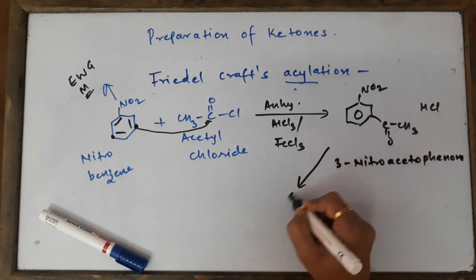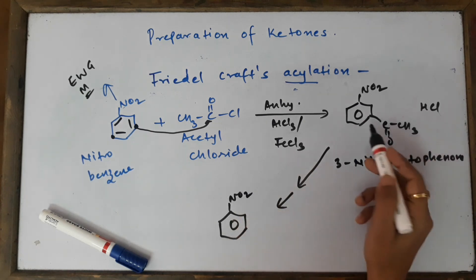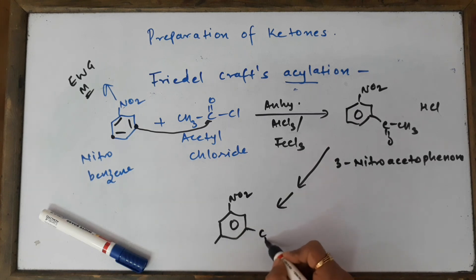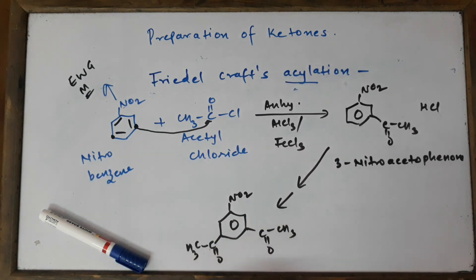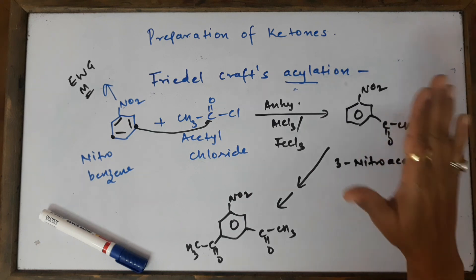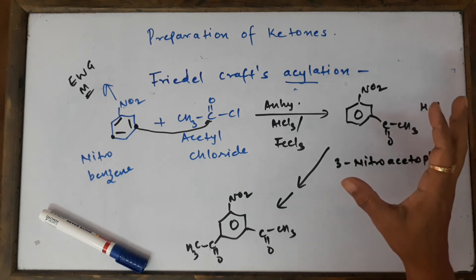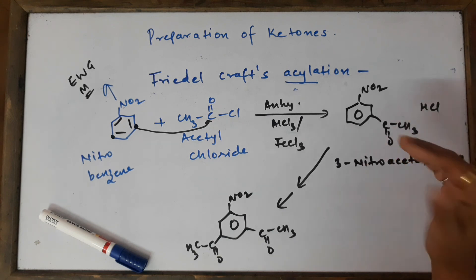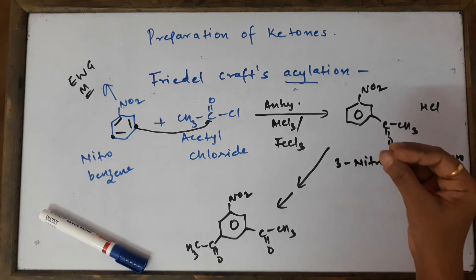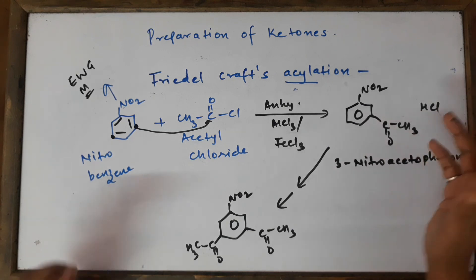If you continue the reaction further without stopping, the second meta position would also get substituted. But in the board exam, we write only the mono-substituted product and stop at that stage. That's all about the methods of preparation of ketones. In the next video, we'll see the physical properties of aldehydes and ketones. Till then, revise your notes, do self-study, make a proper timetable, and devote time to offline studies. Take care, bye, God bless.